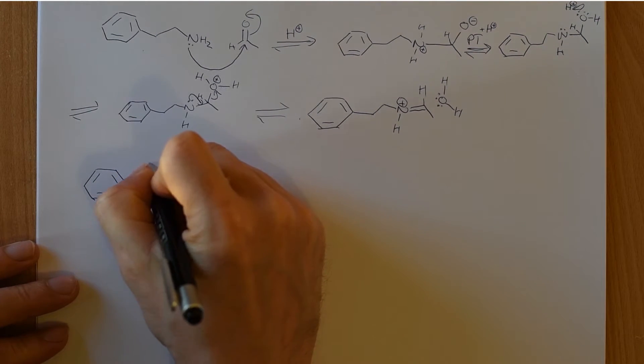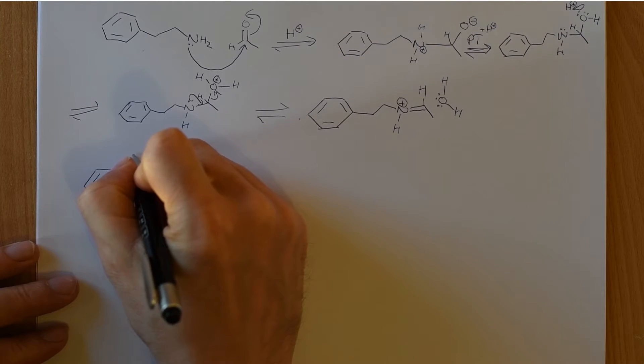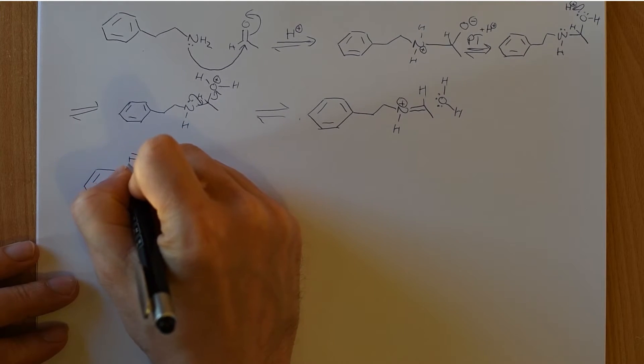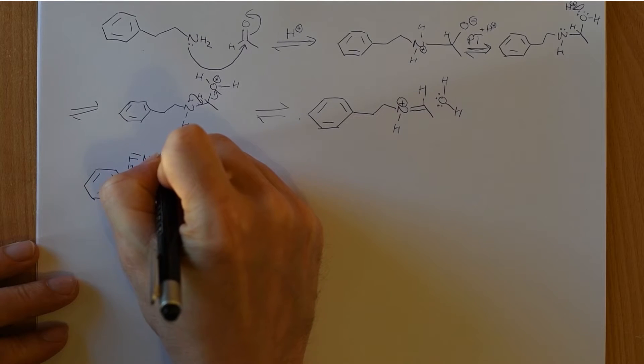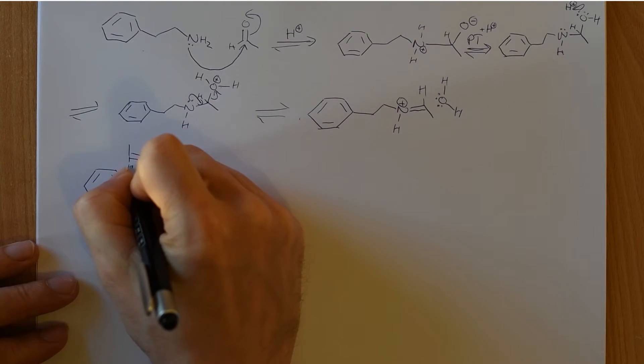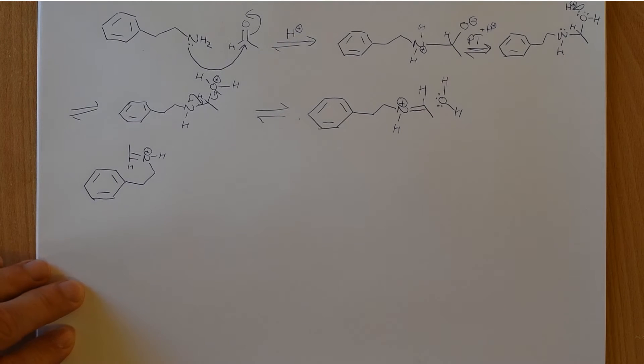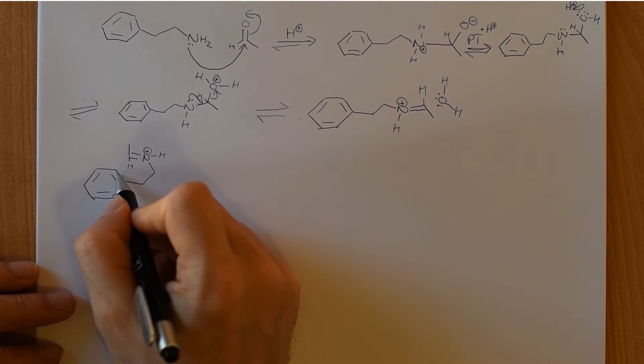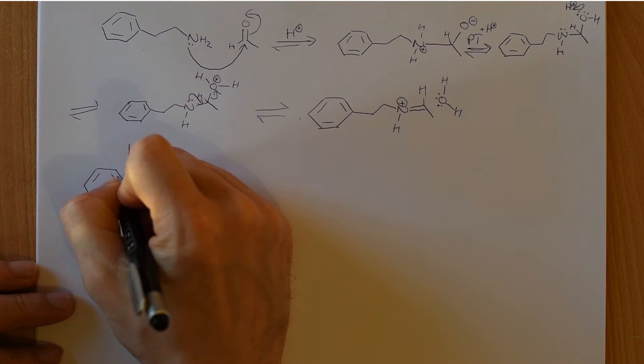So one carbon, two carbons, then we have a bond to our nitrogen, and then our nitrogen double bond to a carbon with a methyl group and a hydrogen attached. And that nitrogen is still protonated, it's still an iminium. And now it's going to be attacked by the aromatic ring.